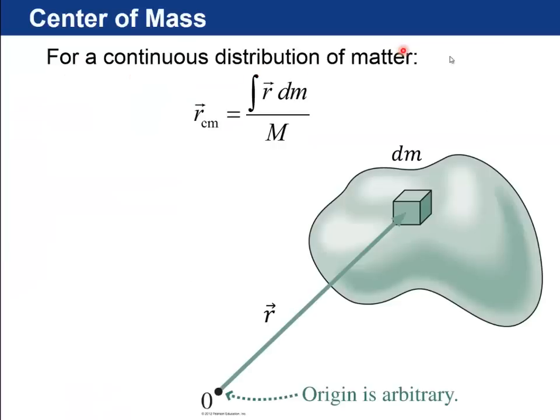And if you have a continuous distribution of matter, then you need to do an integral. So imagine you have some big volume of mass and you set up a coordinate system where the origin is somewhere, maybe over here. Then you can divide this whole mass into a whole lot of little delta m's or dm's in the limit of small dm's. And then do an integral of the position of each dm times dm. And this is a volume integral. And then divide it by the total mass of that object.